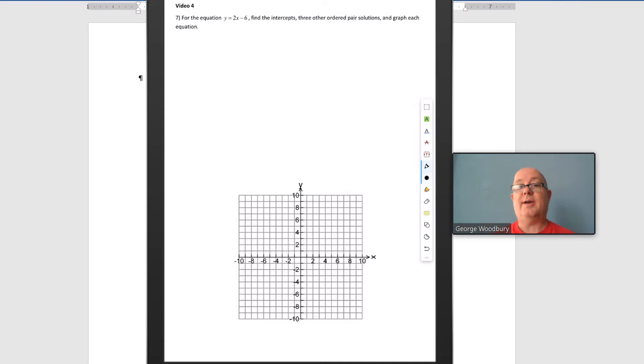For each equation, we're going to find the intercepts, which are the locations where the graph crosses the x or y axes, and we're going to find three other ordered pair solutions kind of like a guess and check idea, and then we're going to use those points to sketch our graph of the equation.